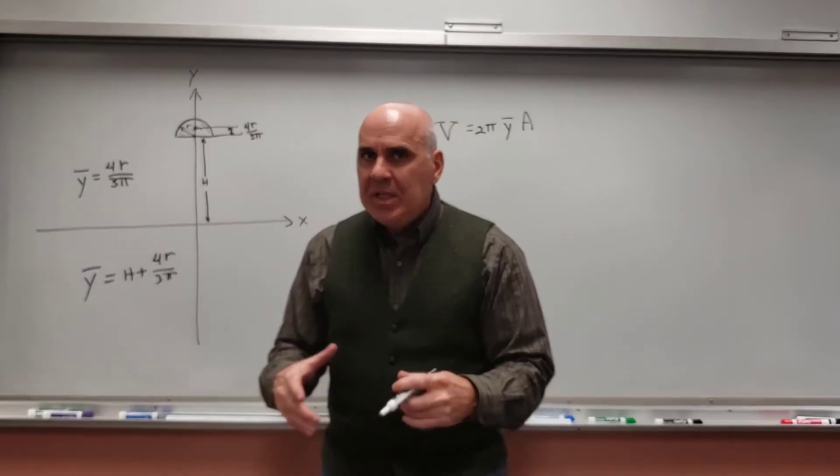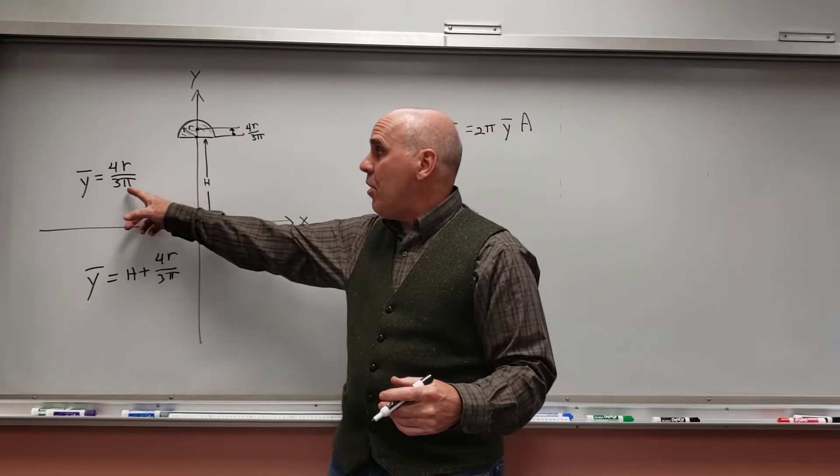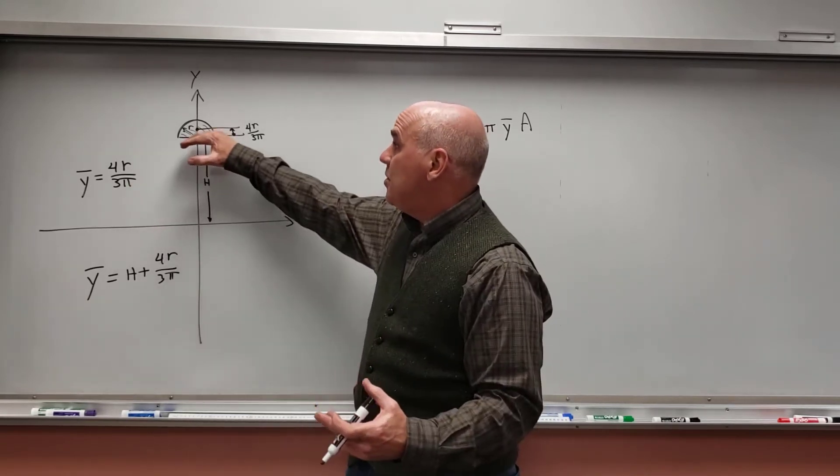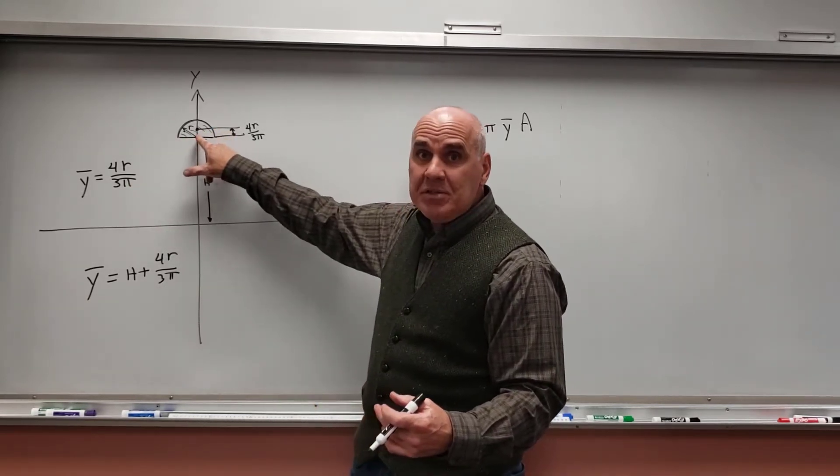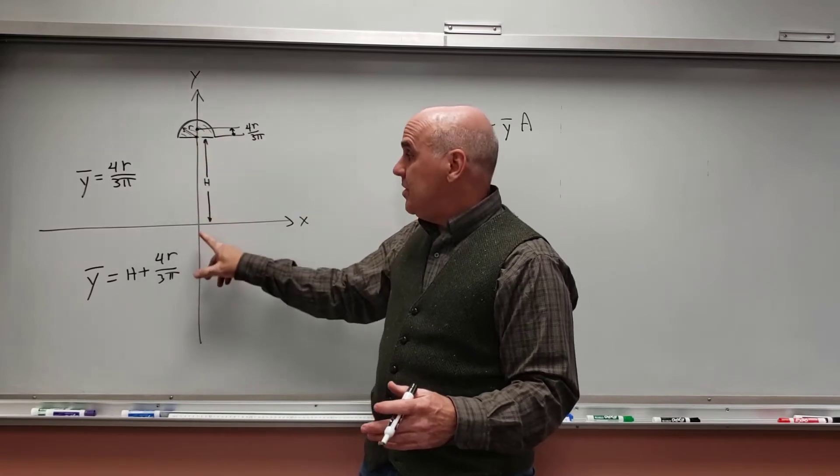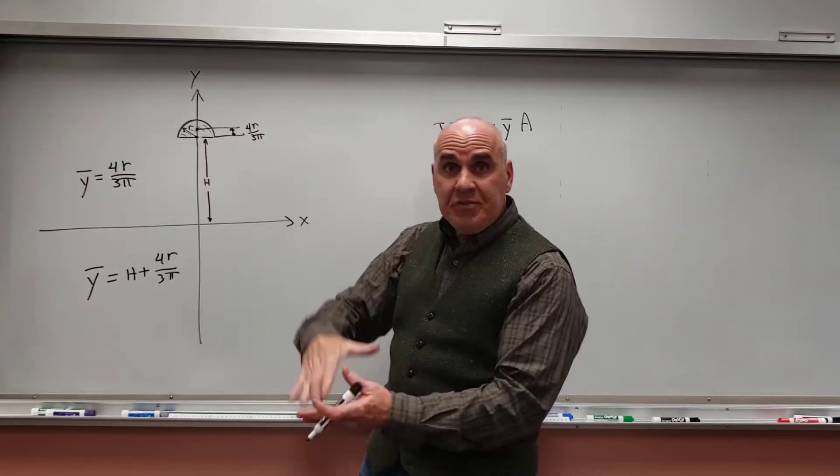I've got to be careful with how these are defined. The book says 4r over 3π, but that assumes that the origin is at the bottom of the semicircle. And it's not. The origin is down here, so I have to shift it up. This is a vertical shift of a distance h.